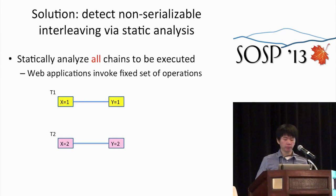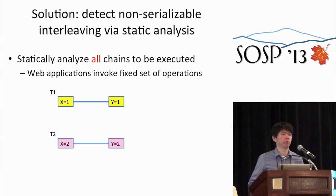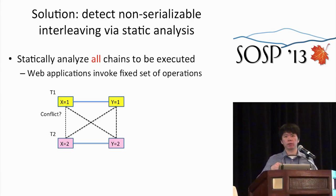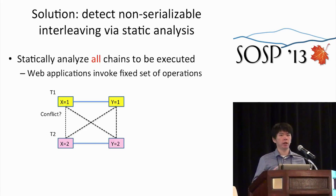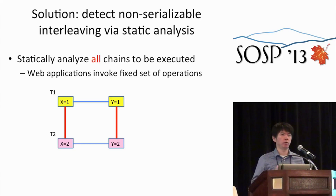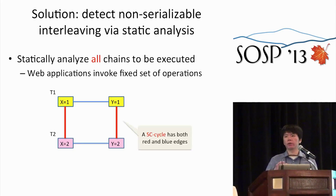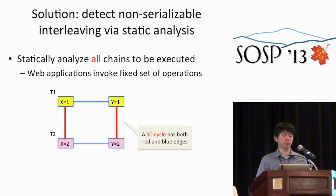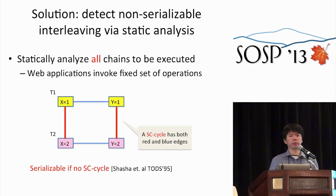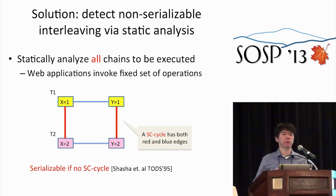Our static analysis is based on transaction chopping theory from the database literature. We connect hops from the same chain using a blue edge (called an S edge), then detect all pairs of hops across two chains to see if there is a conflict — meaning they access the same data and at least one is a write. We connect conflicting hop pairs with a red edge (called a C edge). We then check if there is a cycle in the graph containing both blue and red edges, called an SC cycle. It is proved that chains are serializable if there are no such SC cycles. We also have a few techniques to deal with situations where SC cycles do exist.